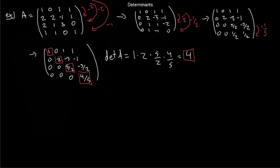Let's do another example — this time a singular matrix, so you should expect the determinant is 0. Start with: row 1 is 1, 0, 1, 1; row 2 is 2, −1, −1, 1; row 3 is 2, 5, 3, 0; row 4 is 1, −1, 0, 1. Apply −2 times row 1 plus row 2, −2 times row 1 plus row 3, and −1 times row 1 plus row 4.